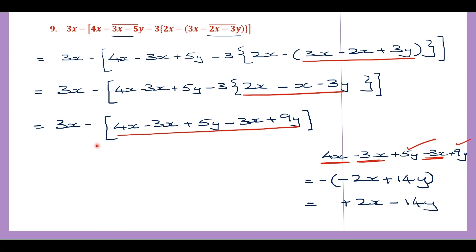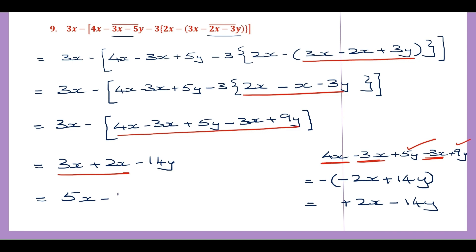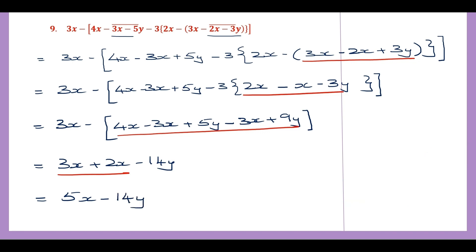So now we have 3x plus 2x minus 14y. Working on the like terms: 3x plus 2x is 5x, and then we have minus 14y. So 5x minus 14y is our final answer.